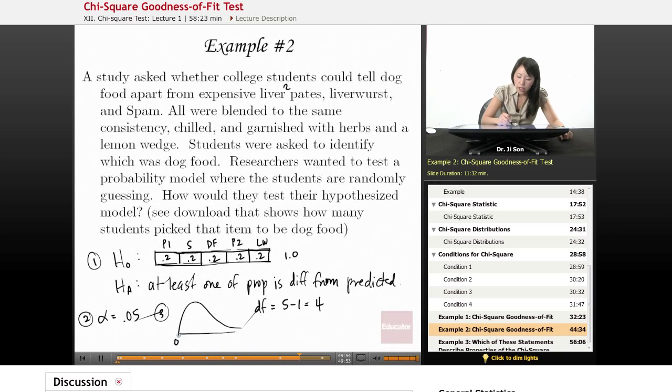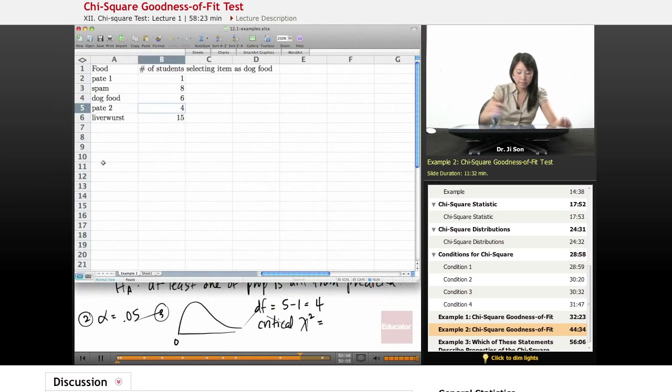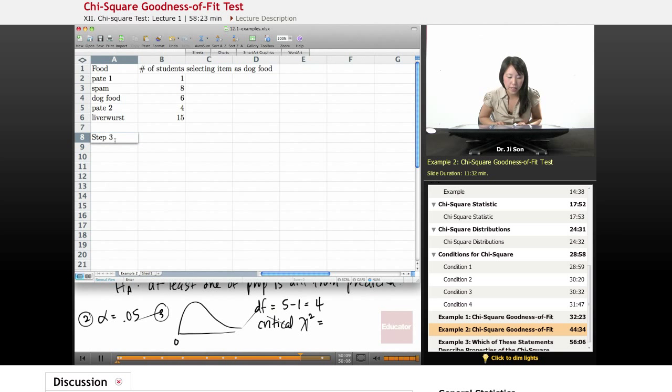So what is our critical chi-square? Well, if you want to pull up your Excel data. I'm just going to start off with step three. In step three, our critical chi-square, in order to find that, we could use chi-inv to put in the probability that we're interested in and our degrees of freedom, which is 4. And so our critical chi-square is 9.449.